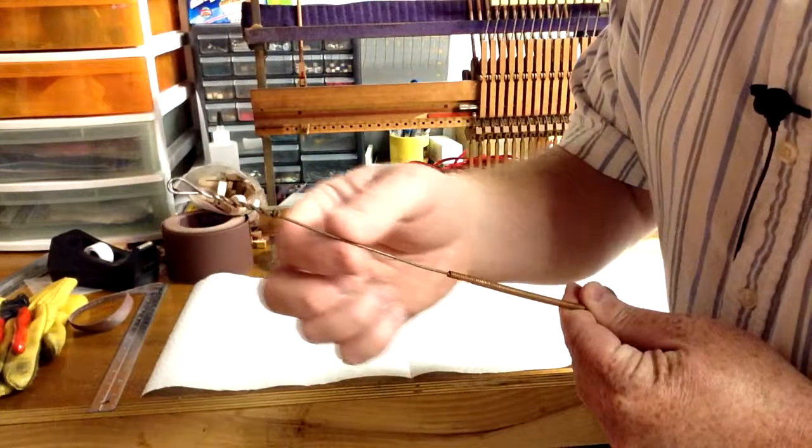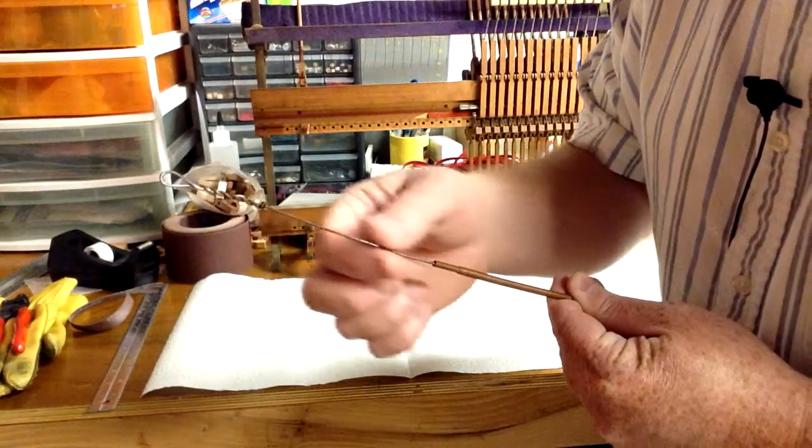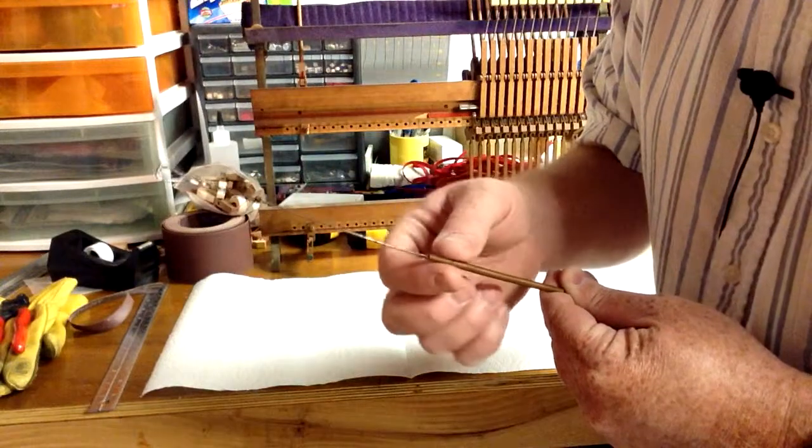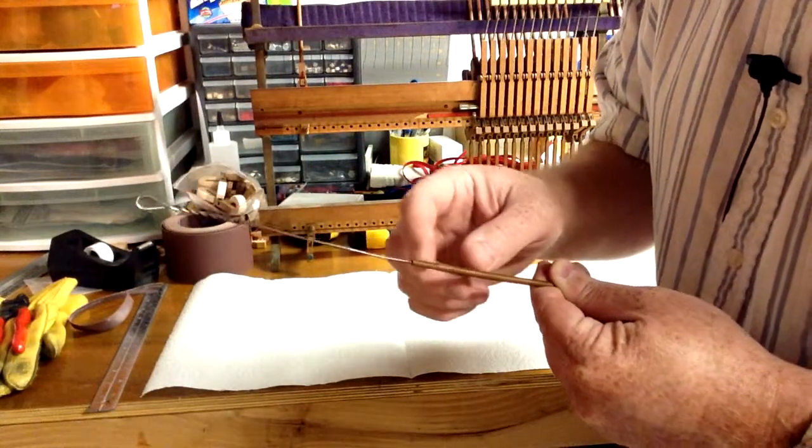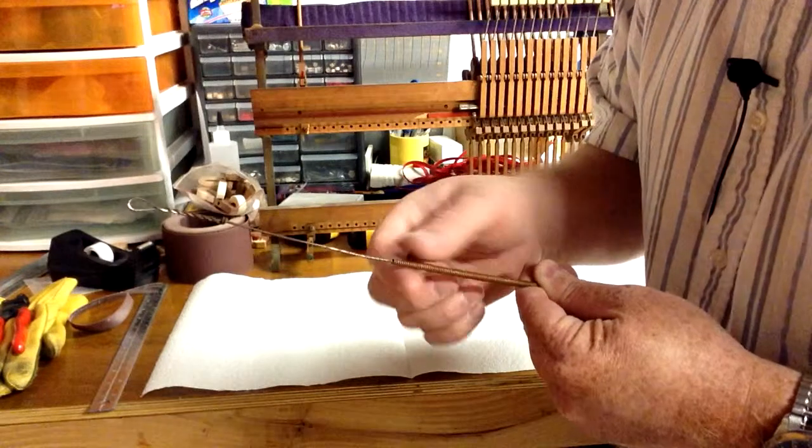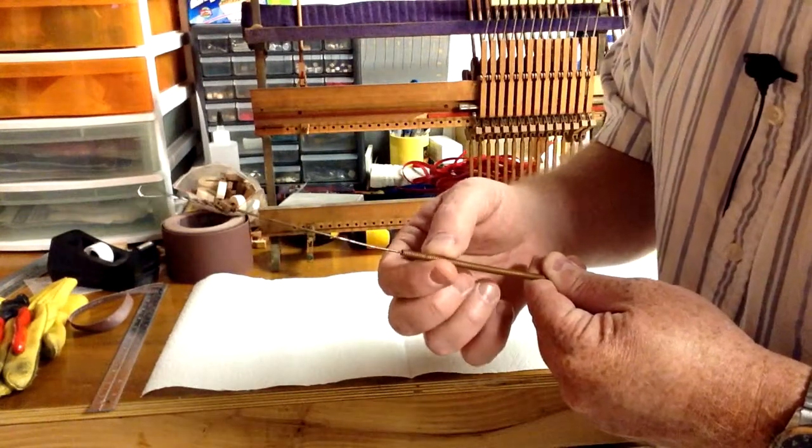As you can see here, there's a thinner wire, which is what's called your core wire, and then here it starts the winding. This one's actually got a double wrap, one thinner wrap and then a thicker one.